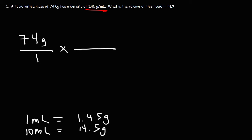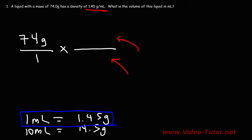Now what we have here is our conversion factor. What part of that conversion factor should go on the bottom, and what part should go on the top? Notice that we have grams on the top left. Thus, we need to put grams on the bottom right. So this part of the conversion factor needs to go on the bottom.